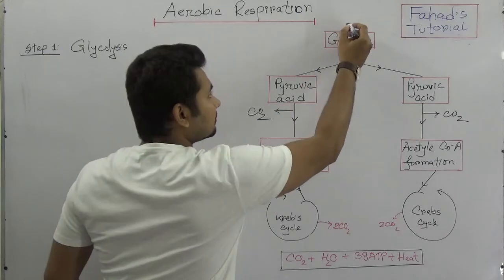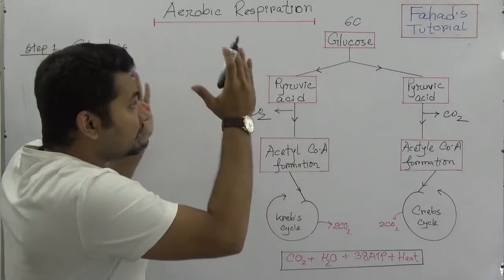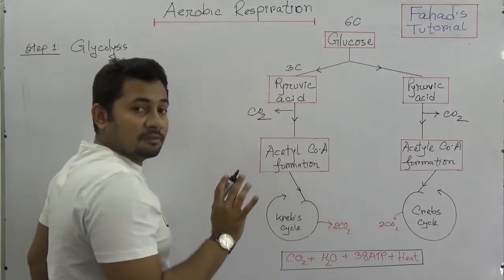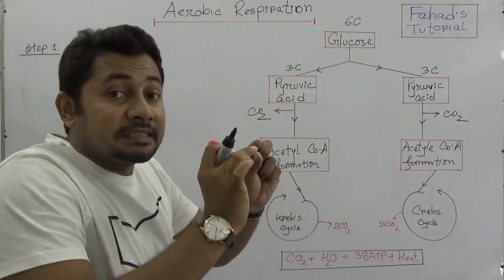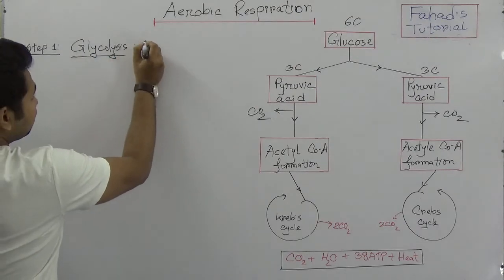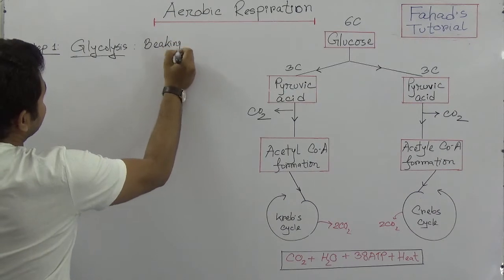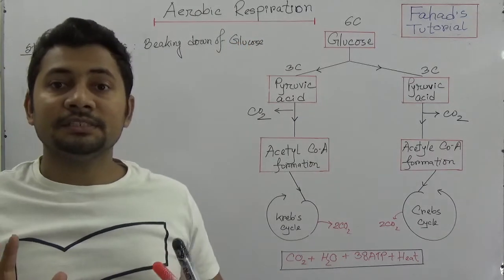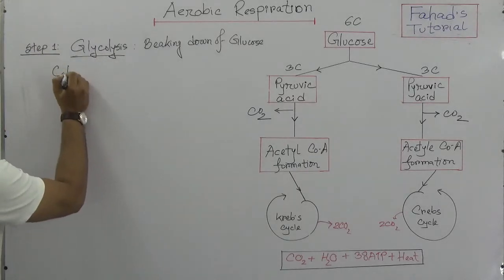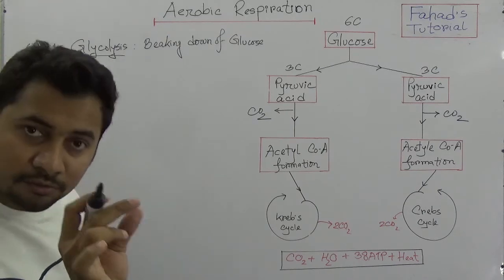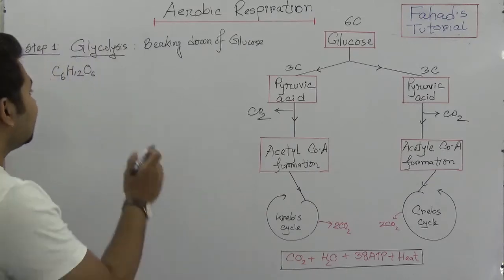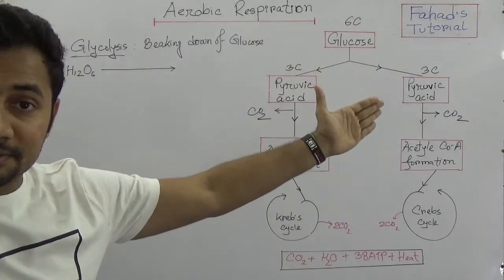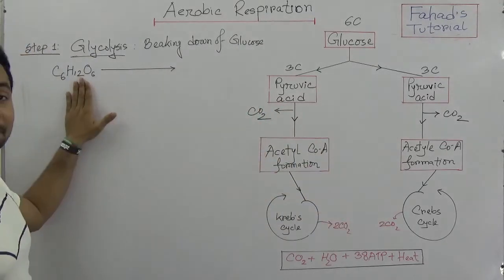Here glucose is a six-carbon compound. When glucose breaks down, pyruvic acid is produced. Pyruvic acid is a three-carbon compound, so two three-carbon compounds are produced. Glycolysis is actually the breaking down of glucose. In HSC level botany this involves a complete series of enzymes and reactions, but at this stage I will explain it in one line.